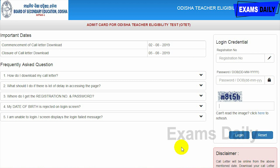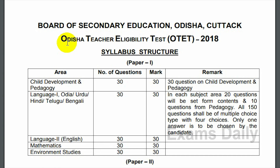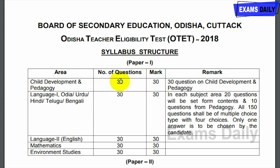The exam date is 5/8/2019 for the OTAT. Now let's look at the exam pattern and syllabus. For Paper 1, the areas are: Child Development and Pedagogy — 30 questions, 30 marks; Language 1 (Odia, Urdu, Hindi, Telugu, or Bengali); Language 2 (English); and Mathematics and Environmental Studies — each area has 30 questions for 30 marks.